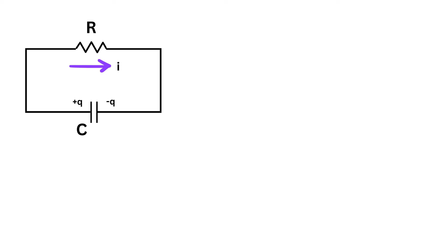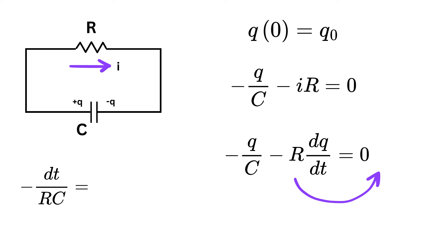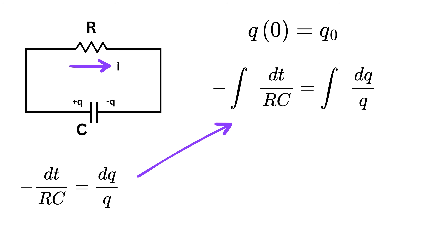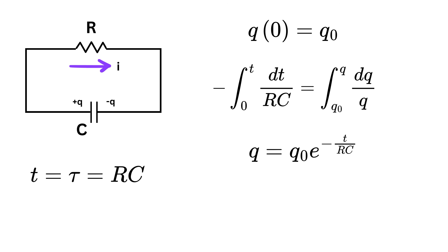At time T, the charge becomes Q and current I flows, with initial charge Q0. Writing the voltage drop equation for the loop: Q divided by C minus I multiplied by R equals zero. Writing I as DQ by DT and rearranging gives minus DT over RC equals DQ over Q. Integrating with limits from Q0 at T equals zero to Q at time T, we finally get Q equals Q0 multiplied by E raised to minus T divided by RC. That means charge decreases exponentially, and at one time constant, about 37% of charge remains.